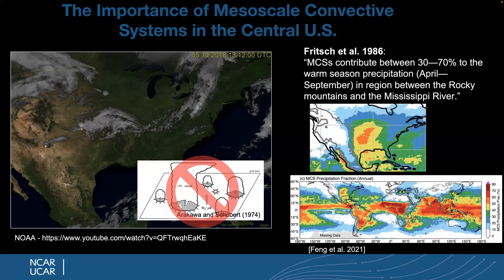Simulating these systems is really crucial because more than 50% of the central US annual precipitation comes from MCSs. The lower-right figure shows that especially the tropics are dominated by MCS precipitation. If you cannot simulate MCSs correctly, you will very likely have large biases in global and regional simulations across all timescales — from forecasts to decadal and climate projections.